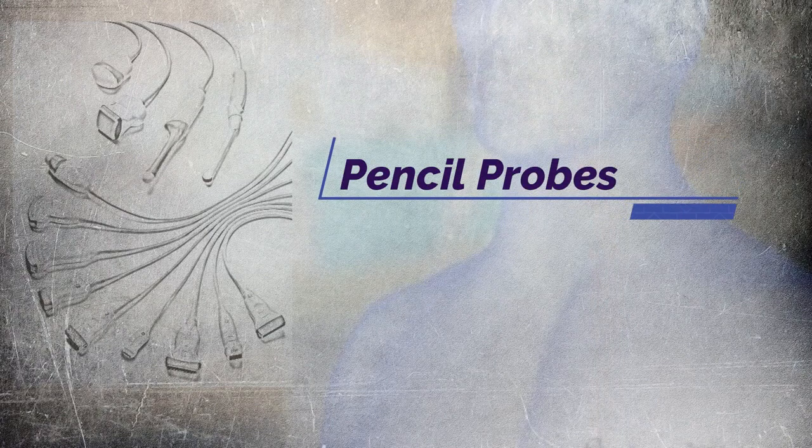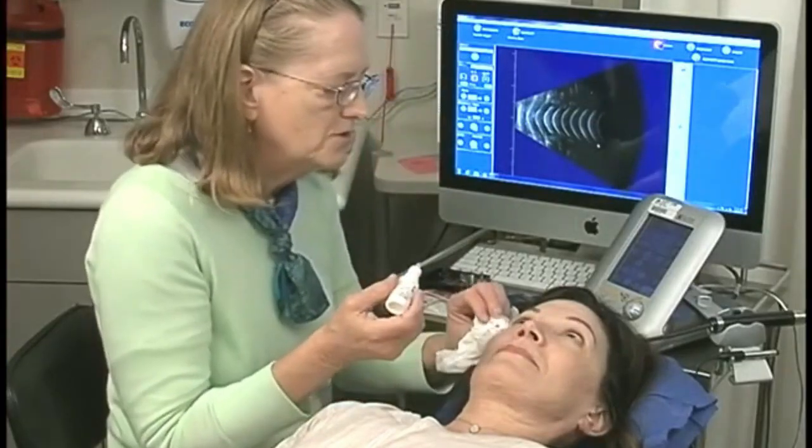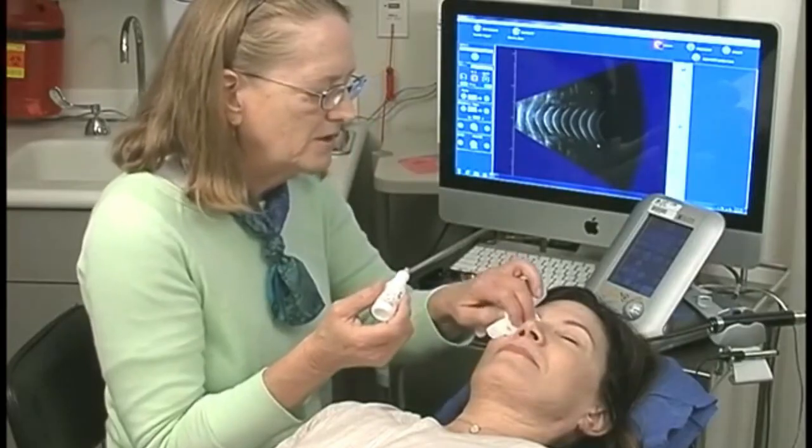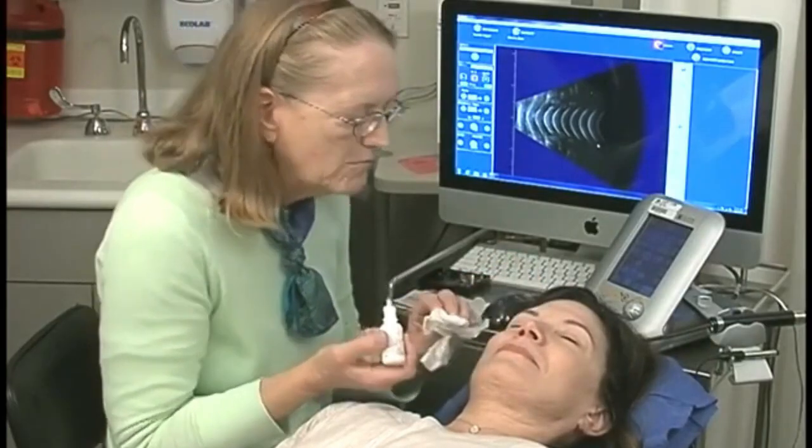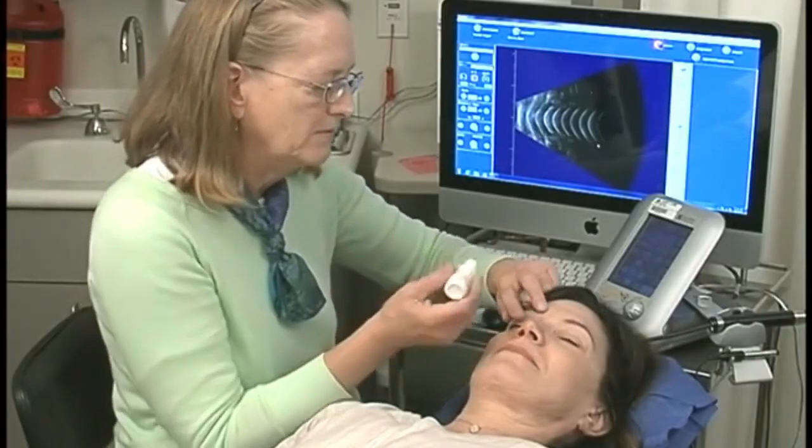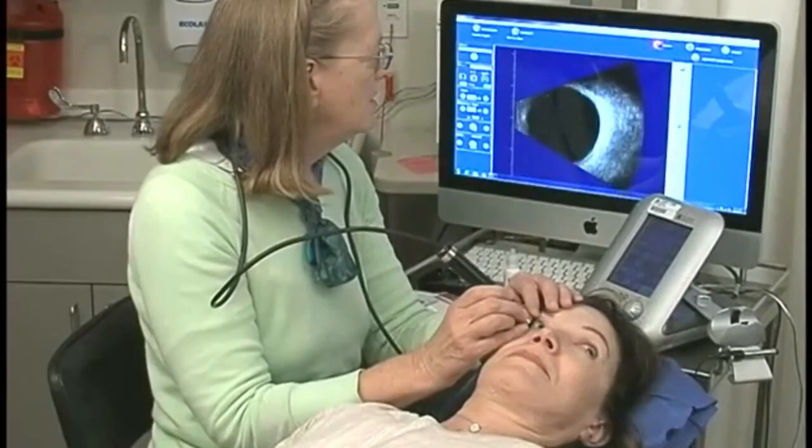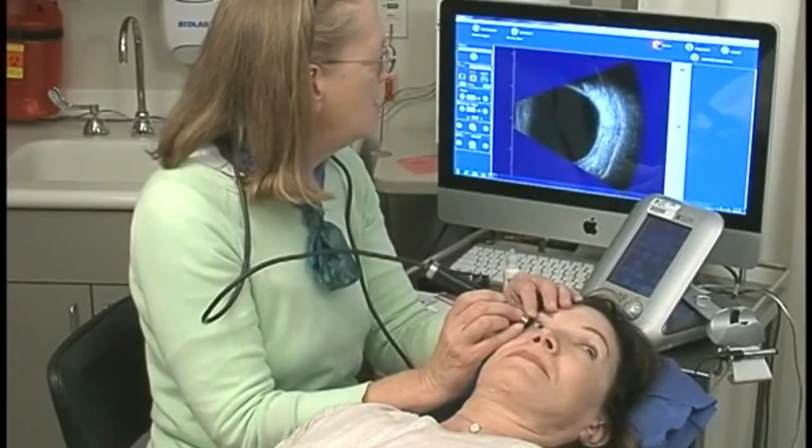At last, but not the least, is pencil probes. Pencil transducers, pictured below on the right, also called CW Doppler probes, are utilised to measure blood flow and speed of sound in blood. This probe has a small footprint and uses low frequencies, typically 2MHz to 8MHz.